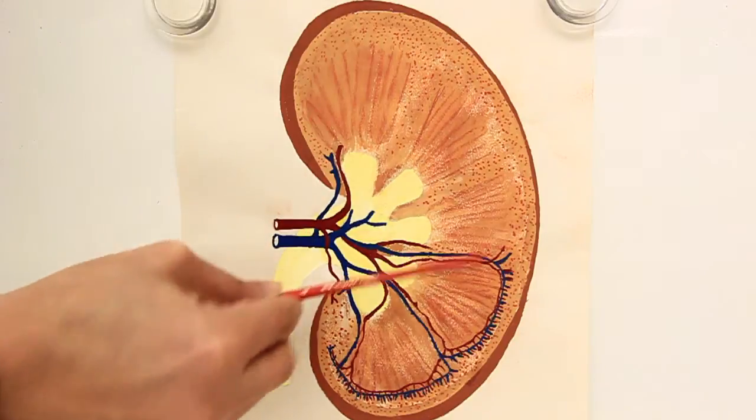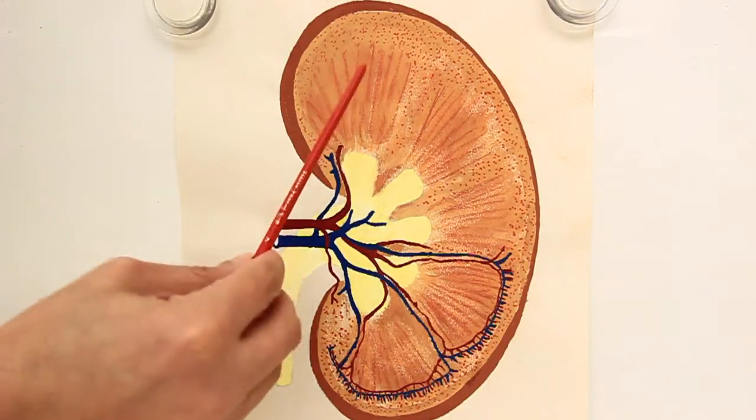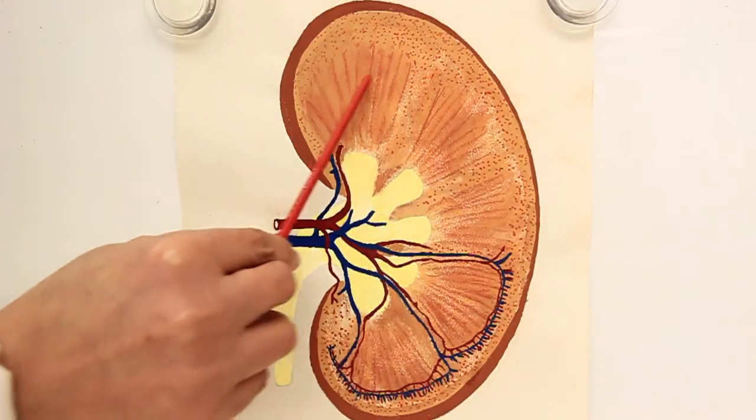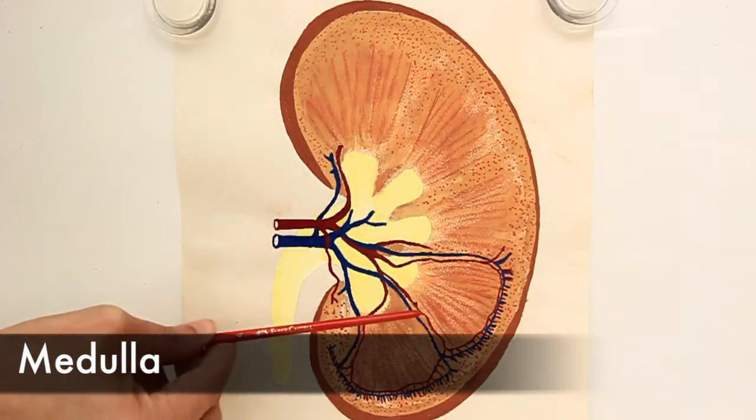Then the intermediate region, which is pretty much darker as compared to the outermost region, this is known as the medulla or the medullary region.